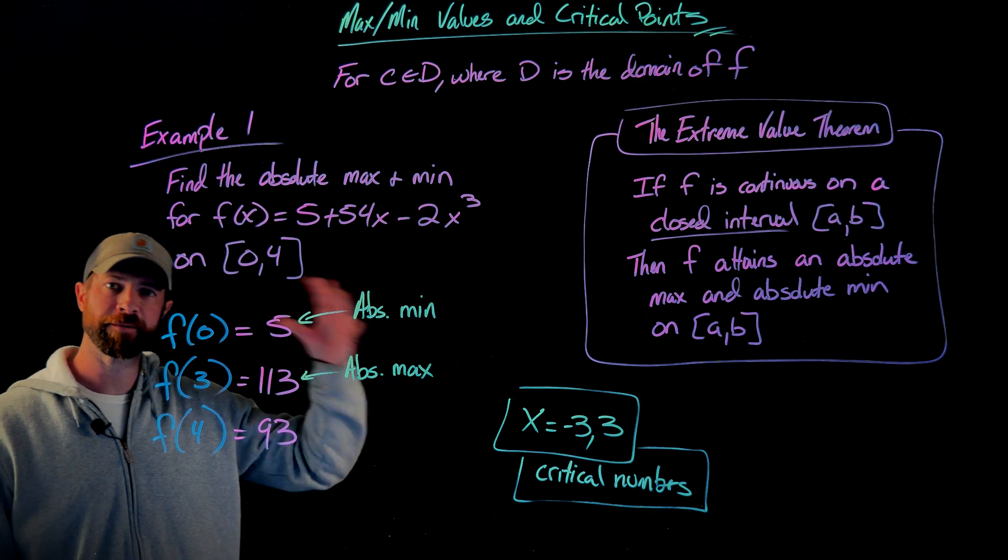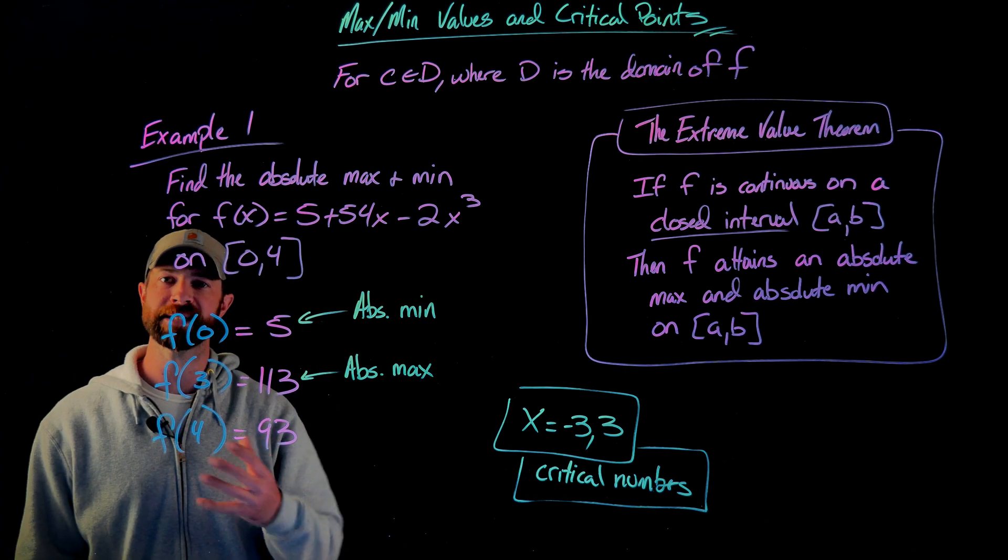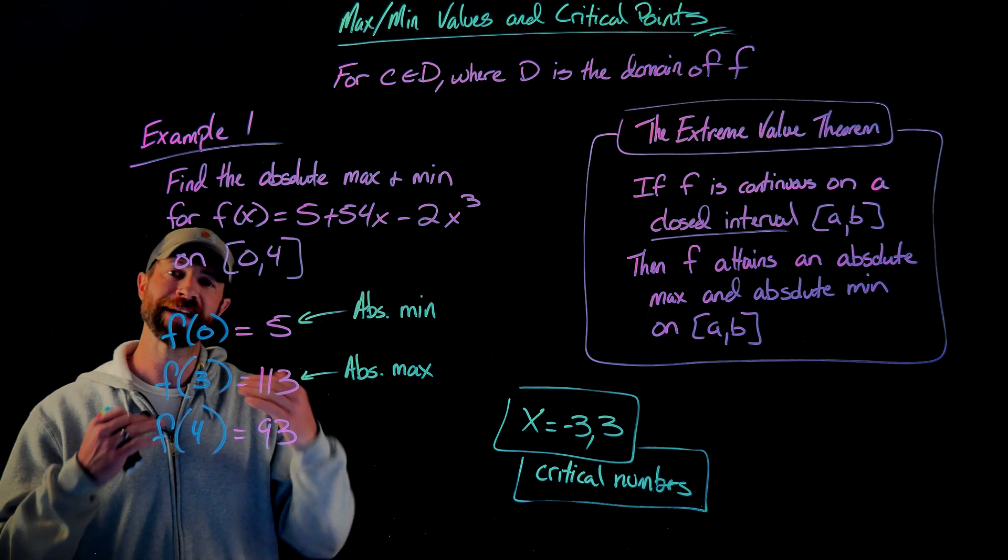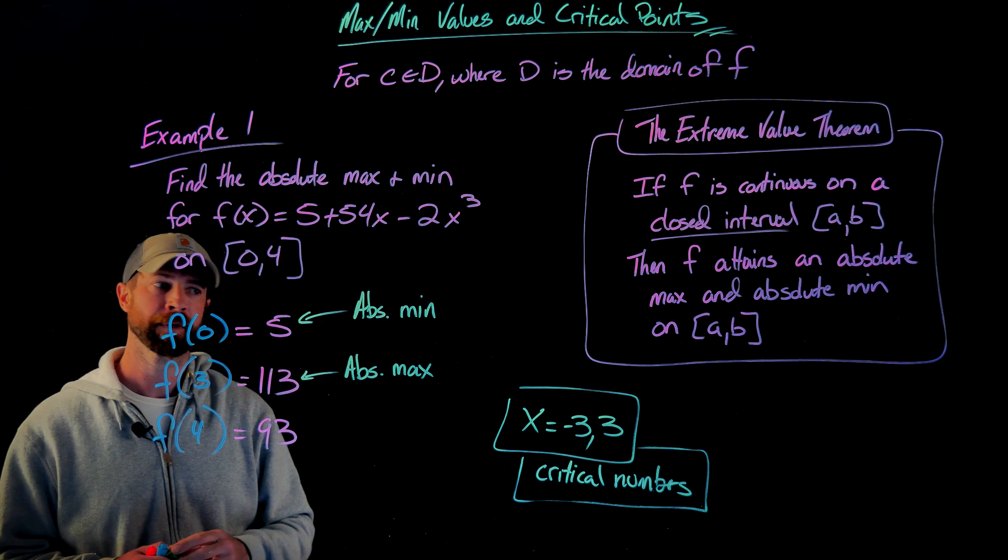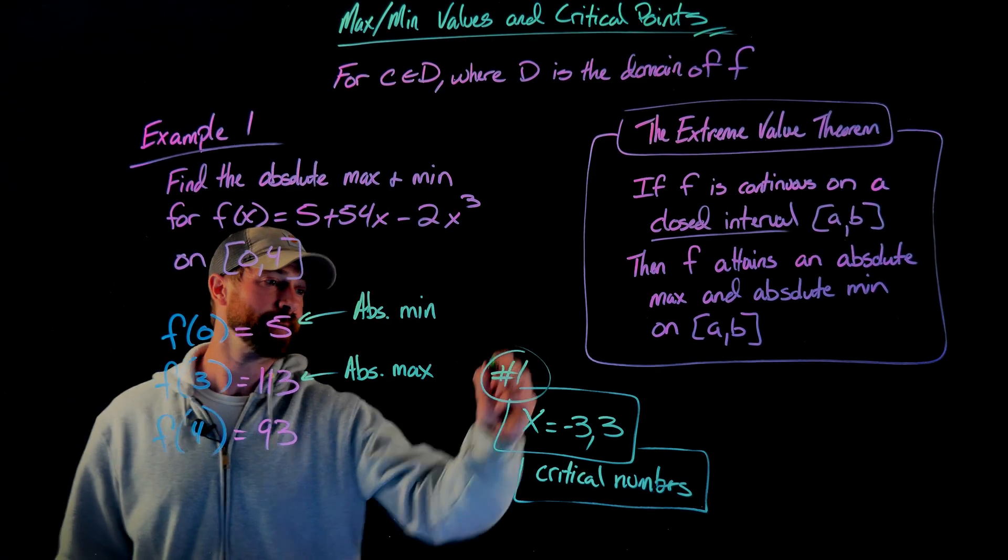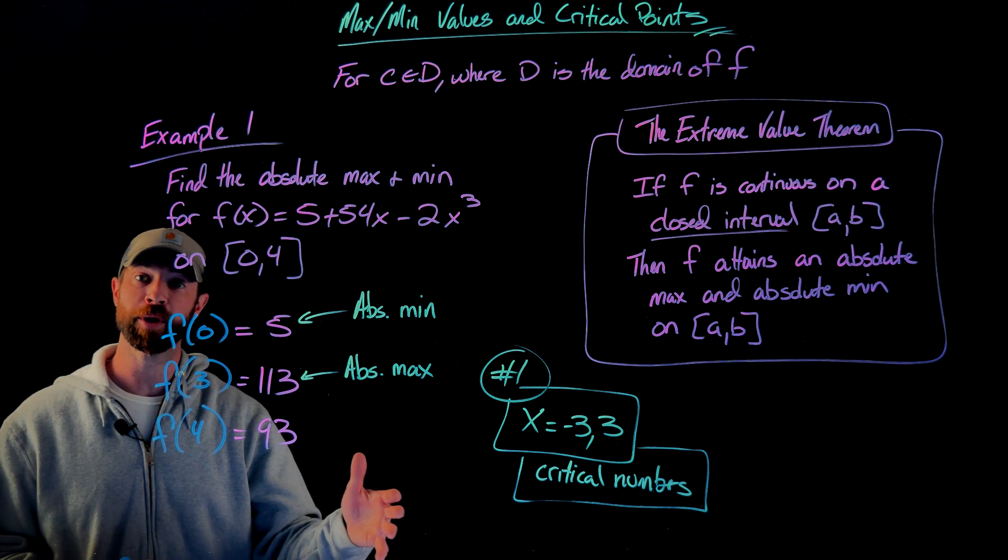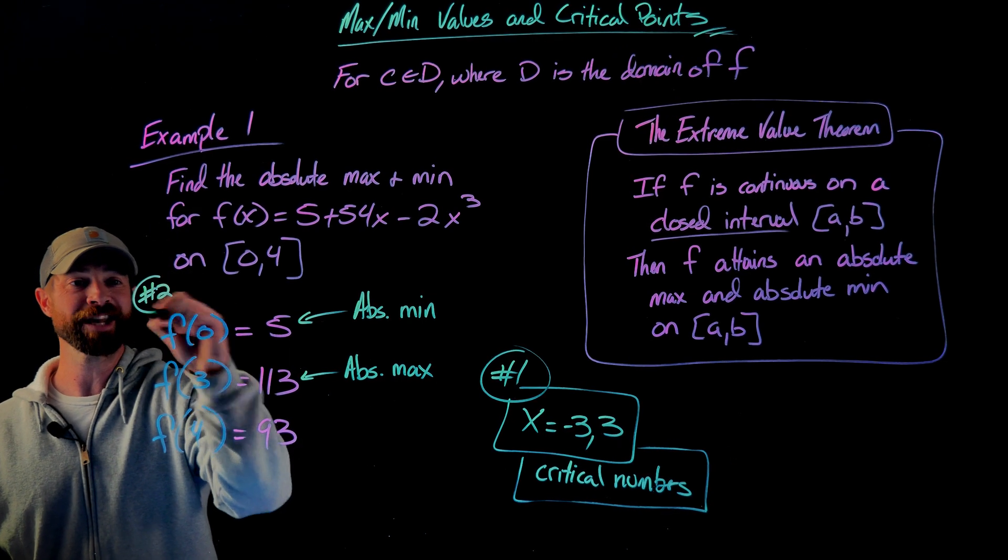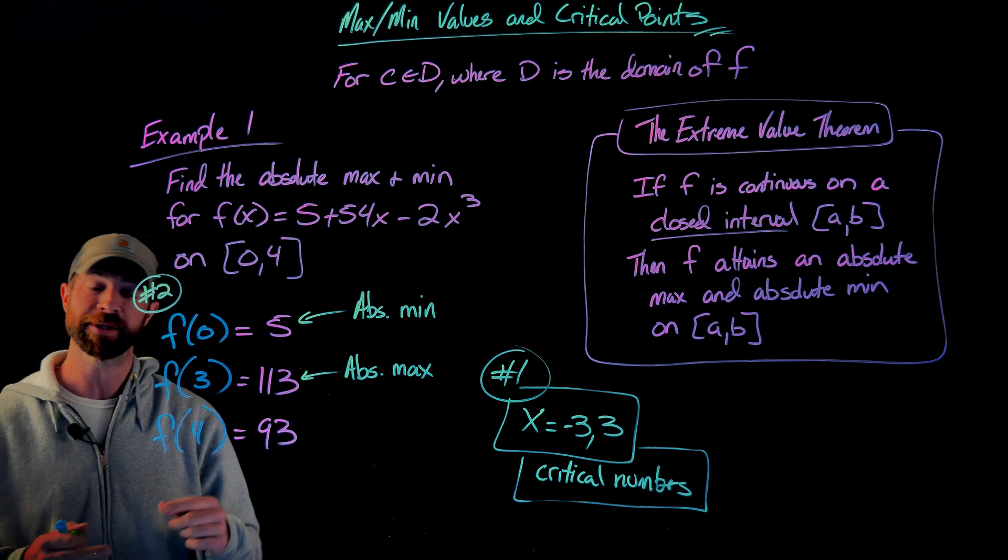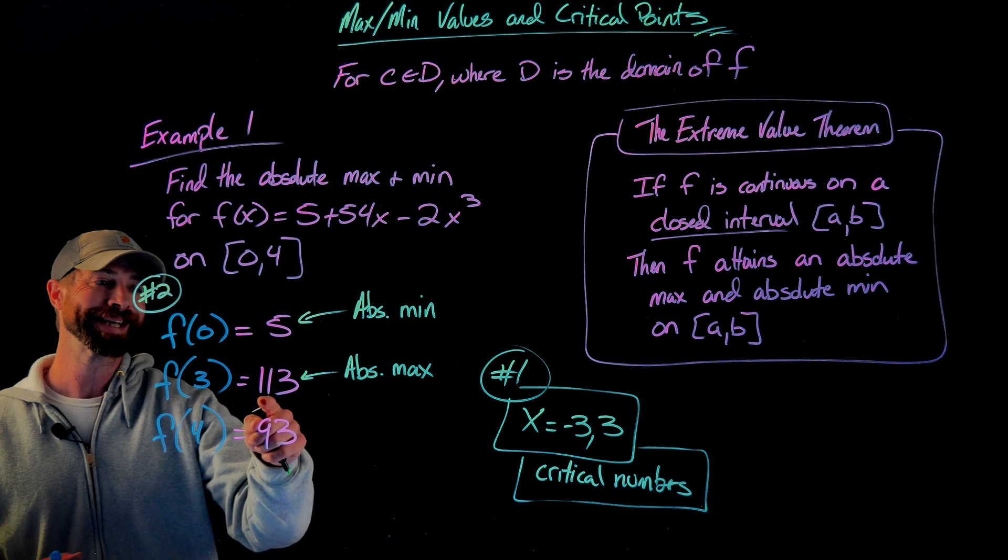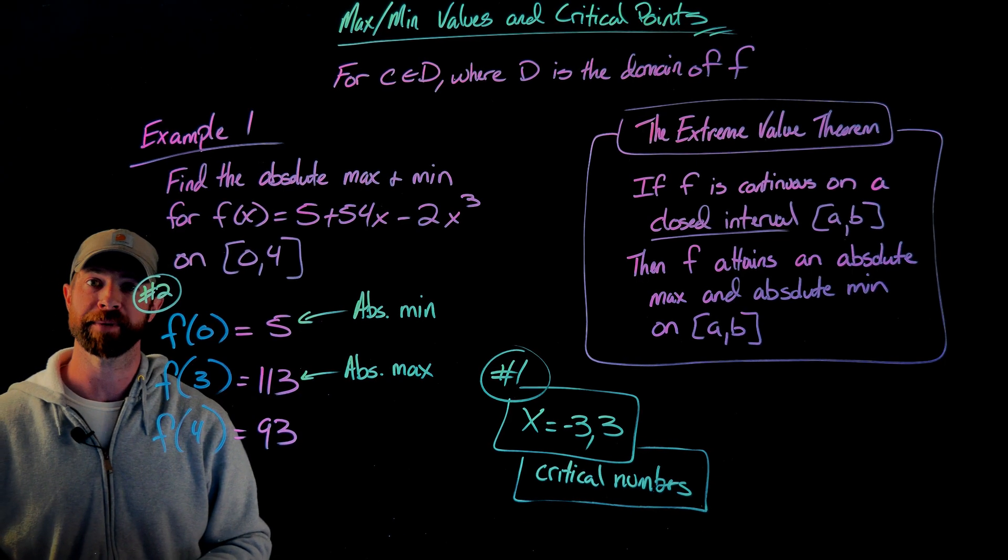Quick recap: First, your function needs to be continuous on a closed interval. If it is, then we know we reach an absolute max and an absolute min. First, identify those critical numbers. After you identify the critical points that land on the interval, take the endpoints and any of those critical numbers that landed on the interval and evaluate the original function to identify your absolute max and absolute min value.